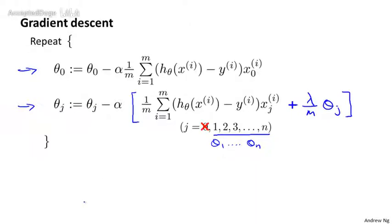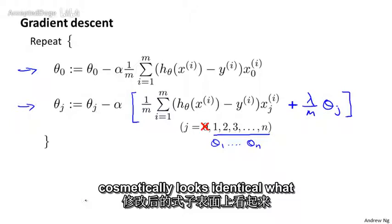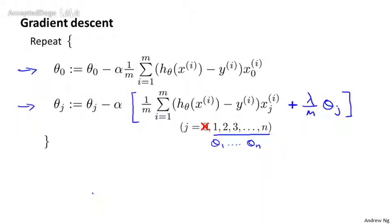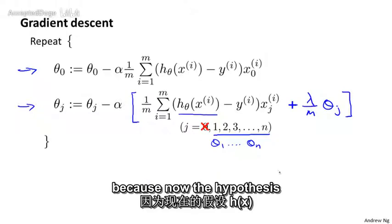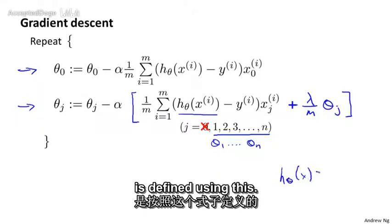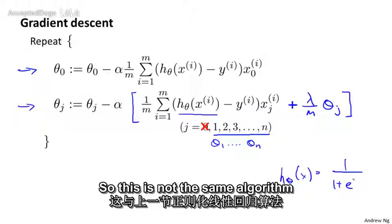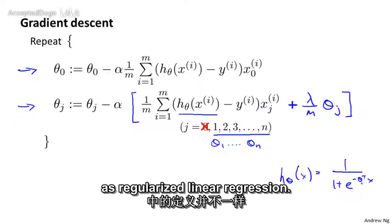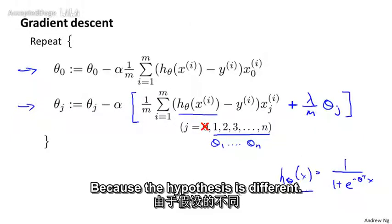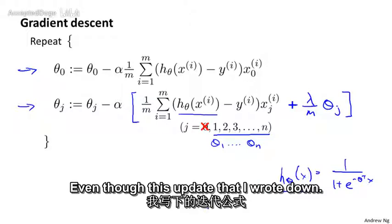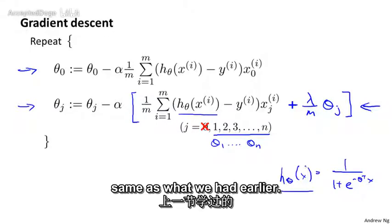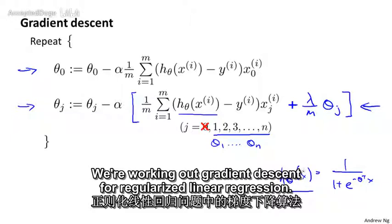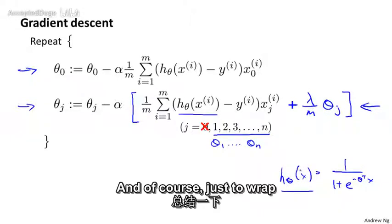In order to modify this algorithm to use the regularized cost function, all I need to do is pretty similar to what we did for linear regression, which is actually to just modify this second update rule. And once again, this cosmetically looks identical to what we had for linear regression, but of course it's not the same algorithm, because now the hypothesis is defined using this. So this is not the same algorithm as regularized linear regression because the hypothesis is different, even though this update looks cosmetically the same as what we had earlier when working out gradient descent for regularized linear regression.